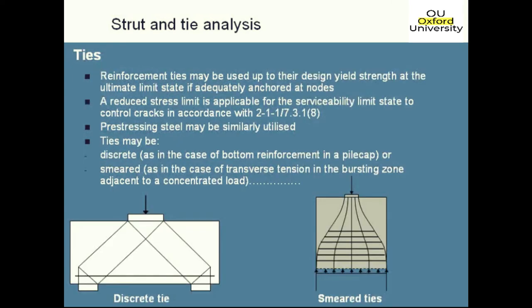Ties are straightforward — a tie can be reinforcement or pre-stressing steel. Since strut-and-tie can be used for both ULS and SLS, the limiting stress in ties depends on the limit state. At ULS, steel can be worked up to its full yield strength. For SLS serviceability, a lower stress corresponding to the allowable crack width is used — typically 0.3 mm for reinforced concrete — which means looking up the allowable stress for the bar size and spacing from a table.